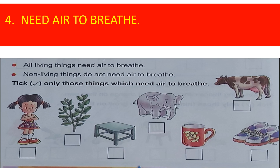Next, characteristic feature number four: need air to breathe. All living things need air to breathe — plants, animals, and human beings all need air to breathe. If we don't get air and oxygen, it will be difficult for us. Non-living things do not need air to breathe.